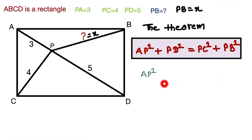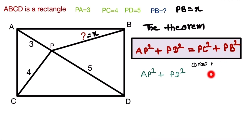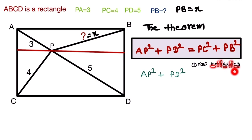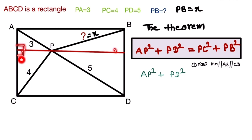We take the expression AP² plus PD² and prove it is equal to PC² plus PB². To do this, we draw a line MN parallel to AB and CD. All angles at the intersections are 90 degrees.